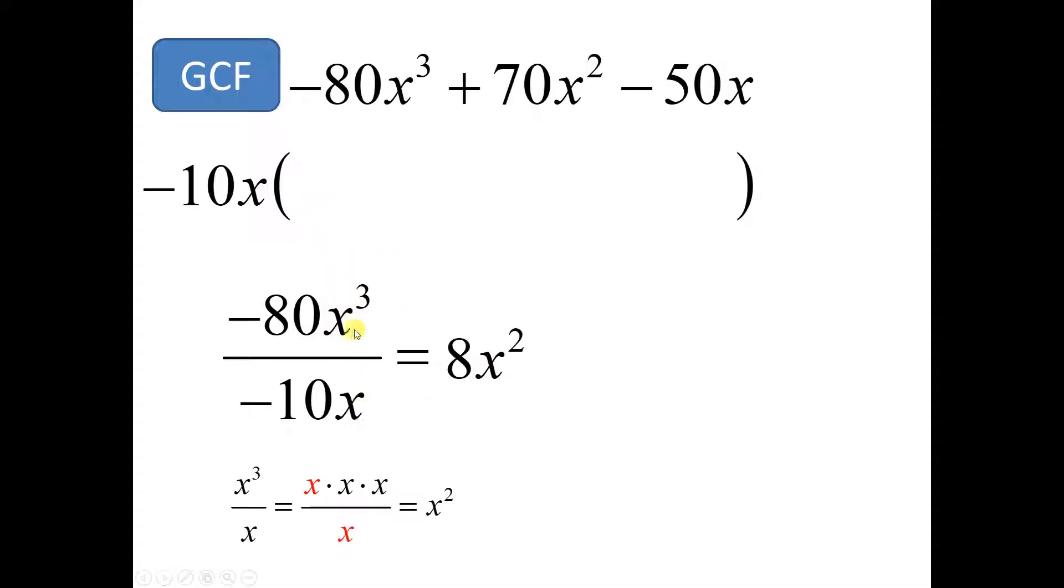Now, if you're not sure how the exponents work, this is x times x times x three times. And this is just x. So those x's you reduce, make 1, and you're left with x times x, which is x². So x² is my first term.